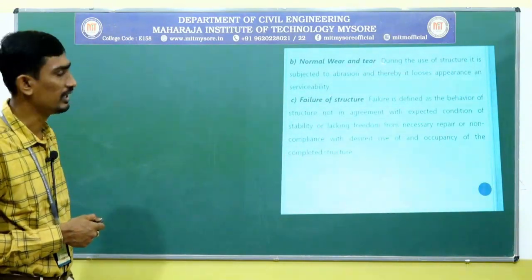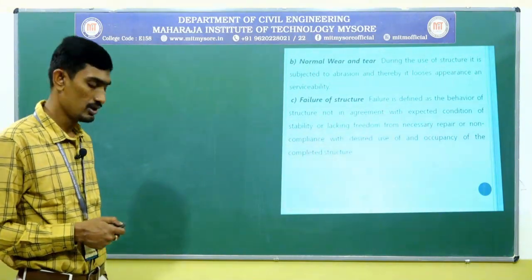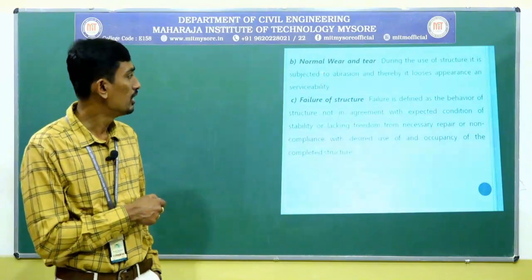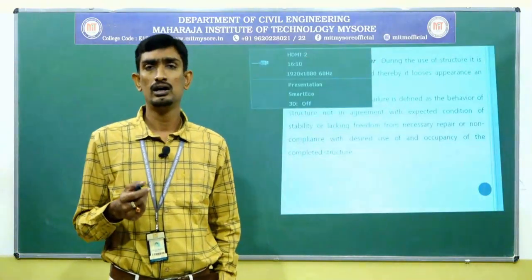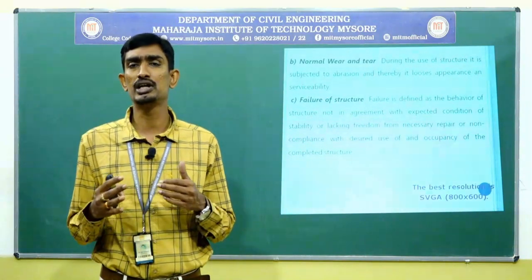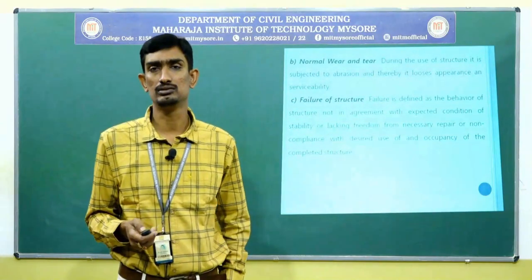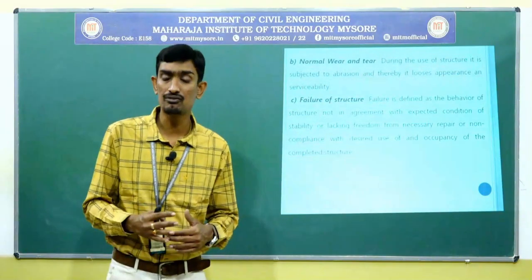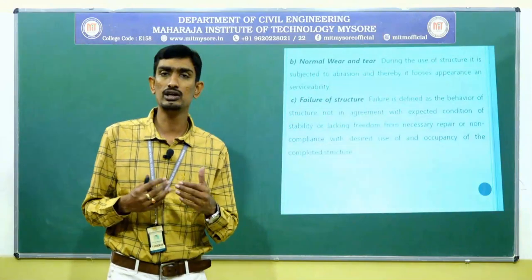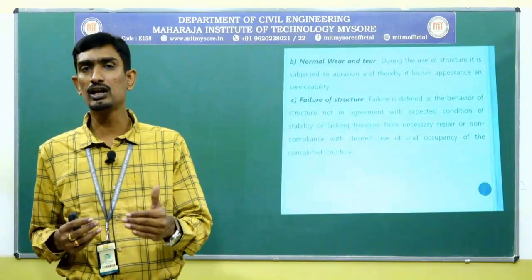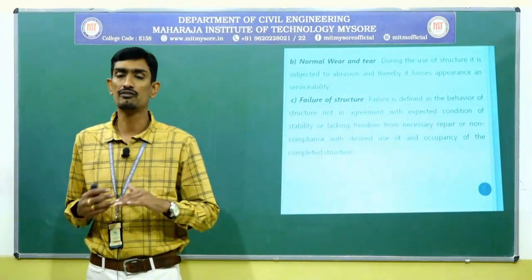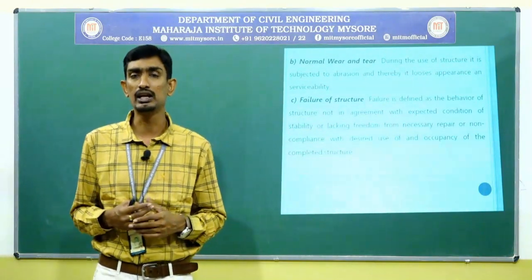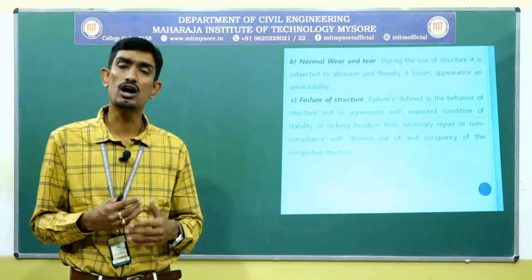Normal wear and tear: during the use of a structure it is subjected to abrasion — erosion is different and more continuous, whereas normal wear refers to the everyday usage of a building. For example, walking continuously on a flooring surface subjects it to abrasion and wearing action, causing the flooring tiles to lose their quality and appearance. This is called normal wear and tear.